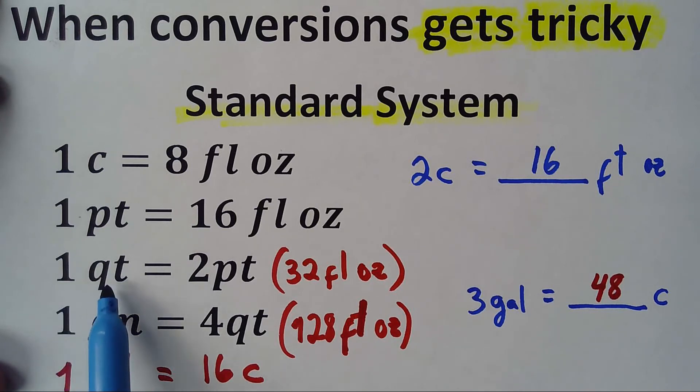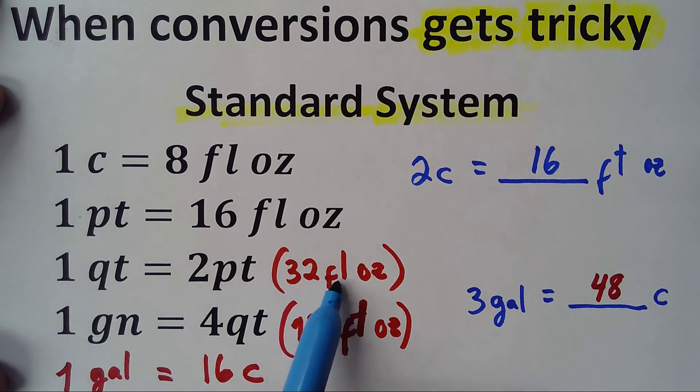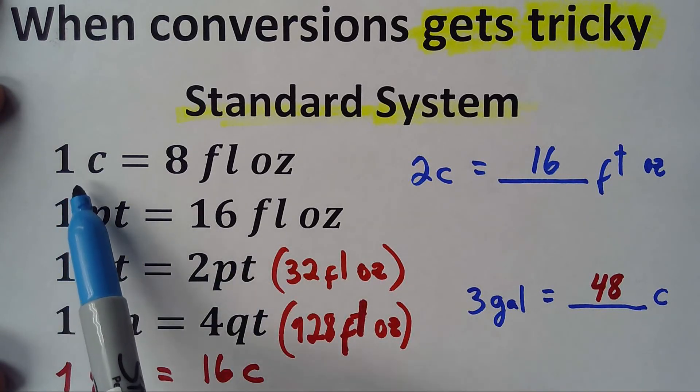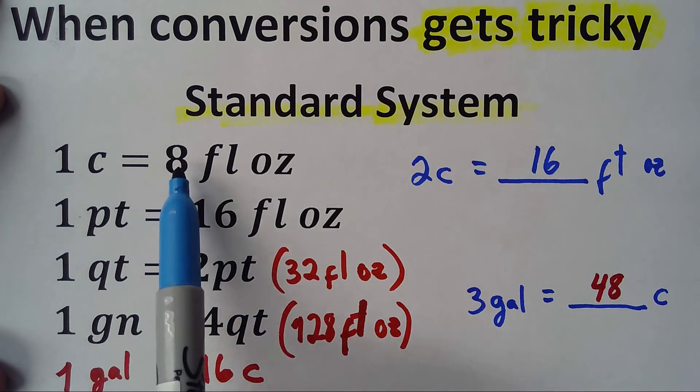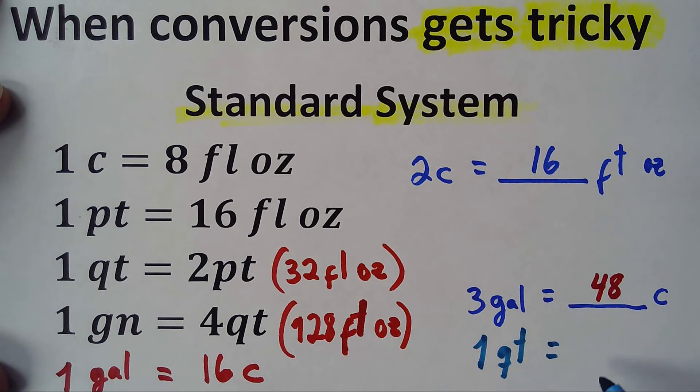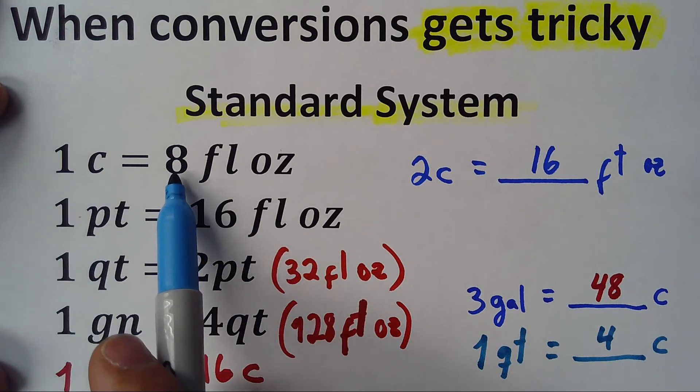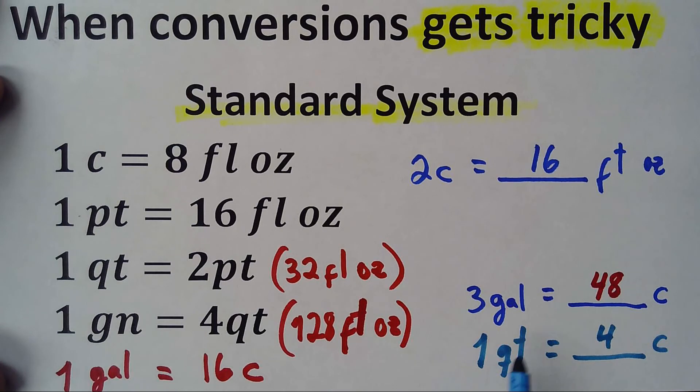Probably some books give you those, but you can find the other ones doing relations. For example, what would be the relation for quart and cups? I don't have it immediately, but I can find it. One quart is 32 fluid ounces, so if one cup is eight fluid ounces, I know that 32 divided by 8 is 4. So I can say that one quart is equal to four cups.